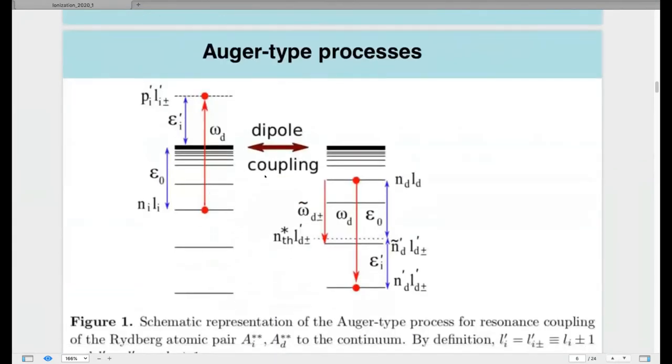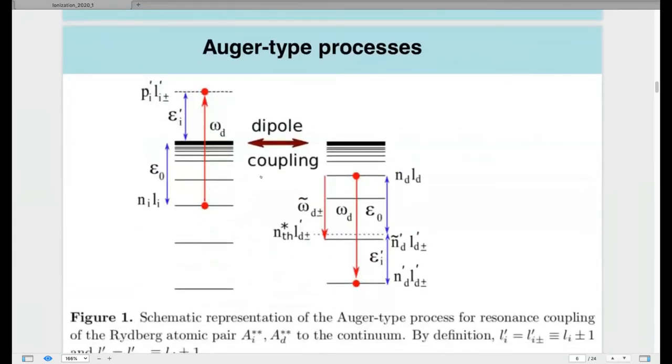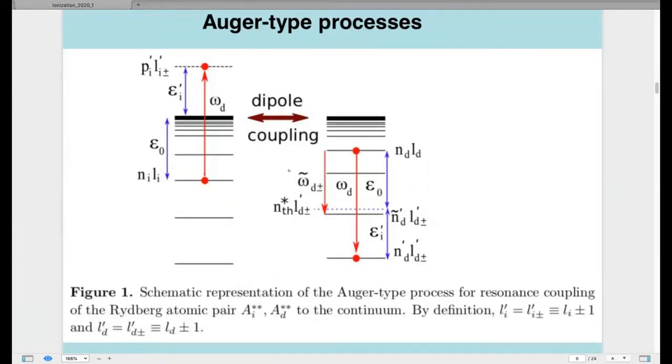So Penning ionization, a long-range process, is enabled by the dipole-dipole interactions between atoms spatially well separated at large distances. Next slide is energy level diagram where we see the Penning ionization process. Due to long-range dipole-dipole interaction, one D atom undergoes transition from D state to deeper bound state,